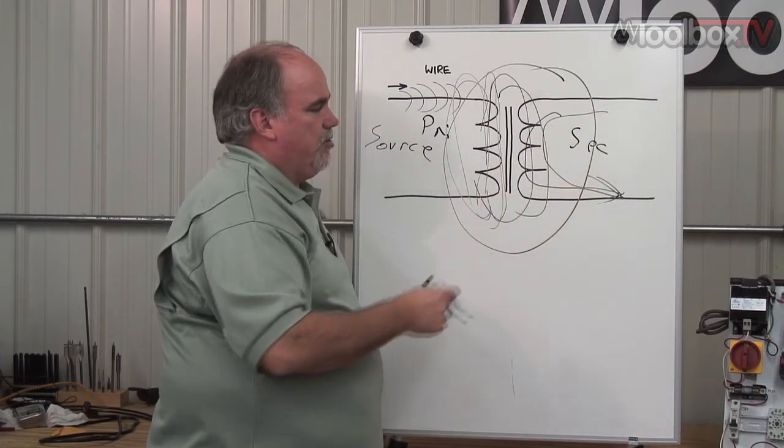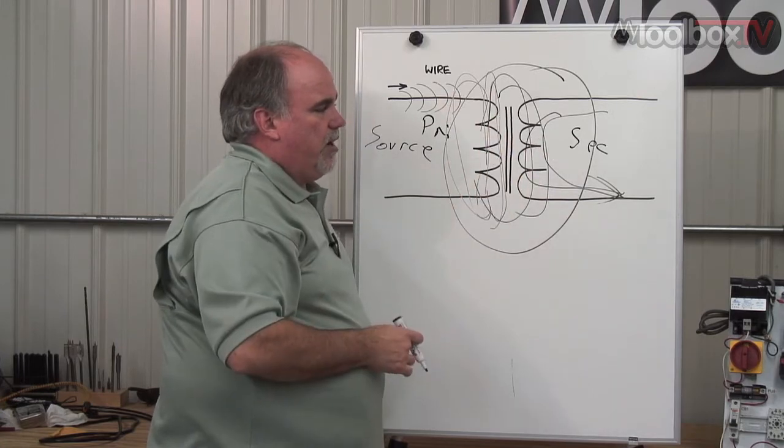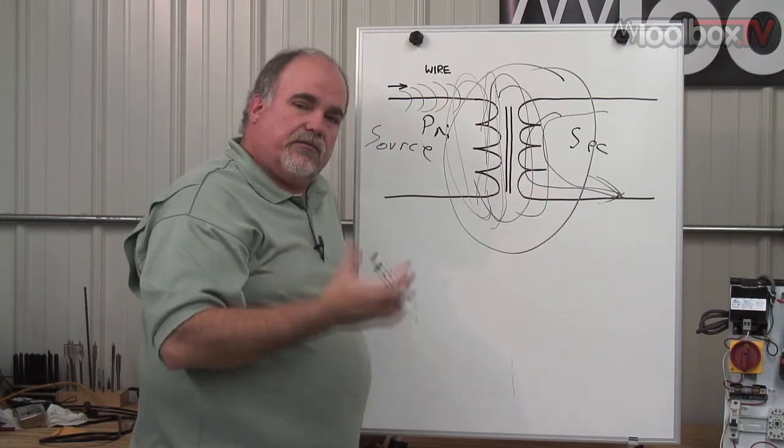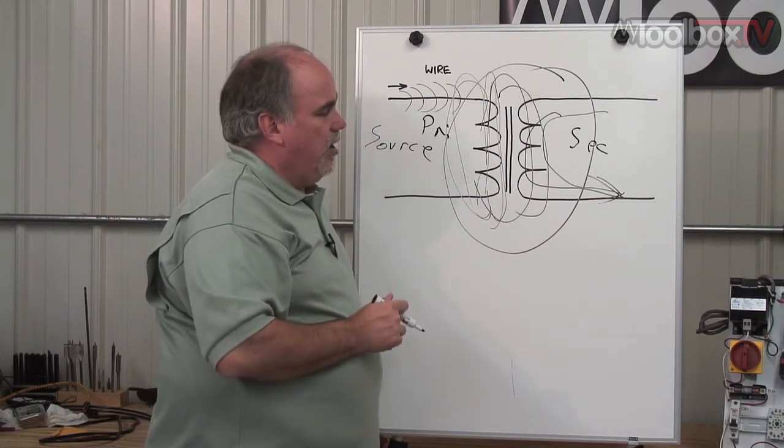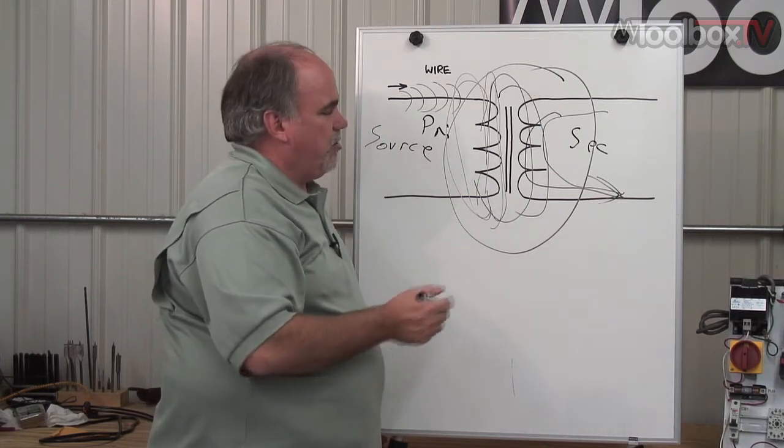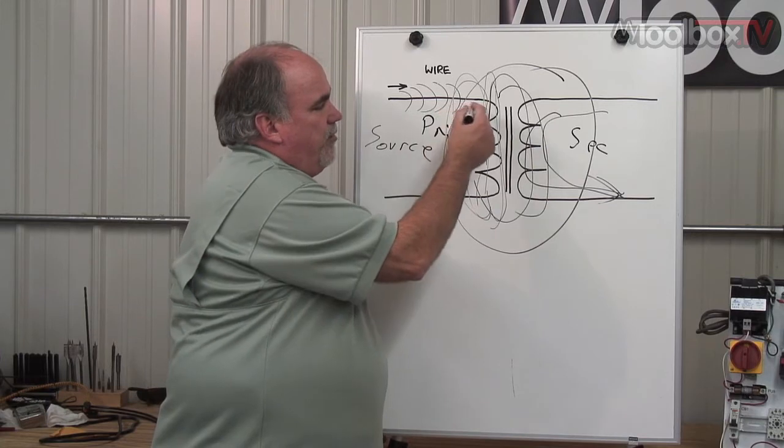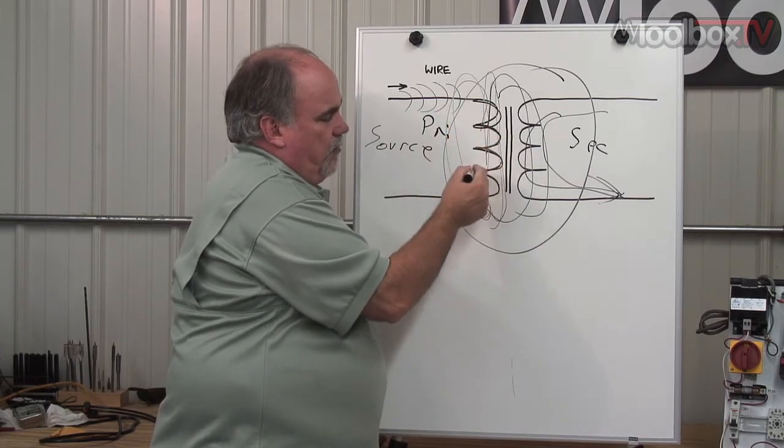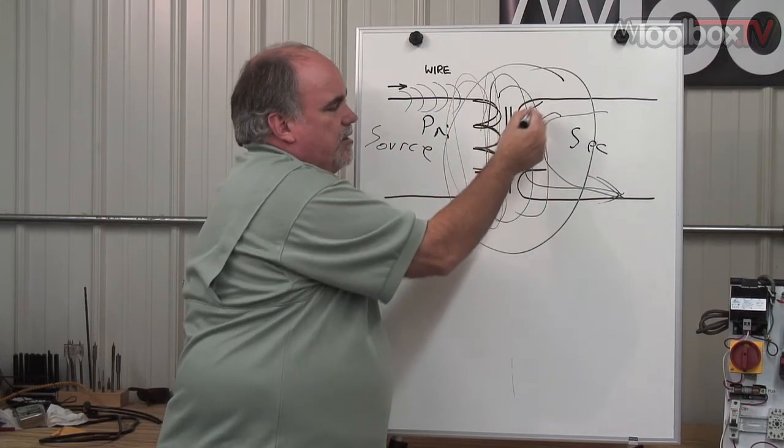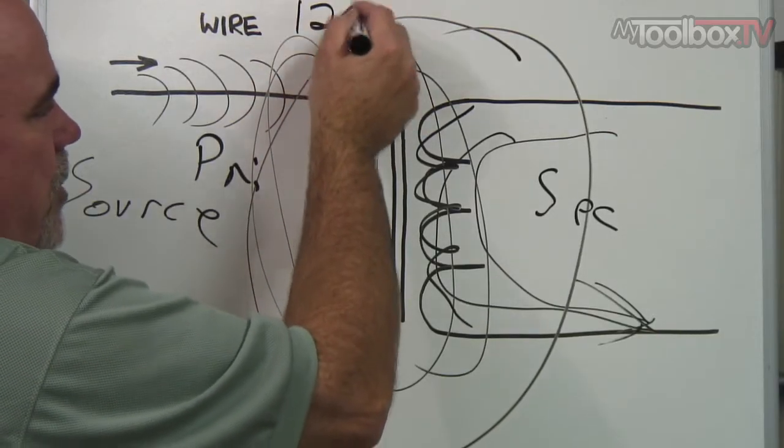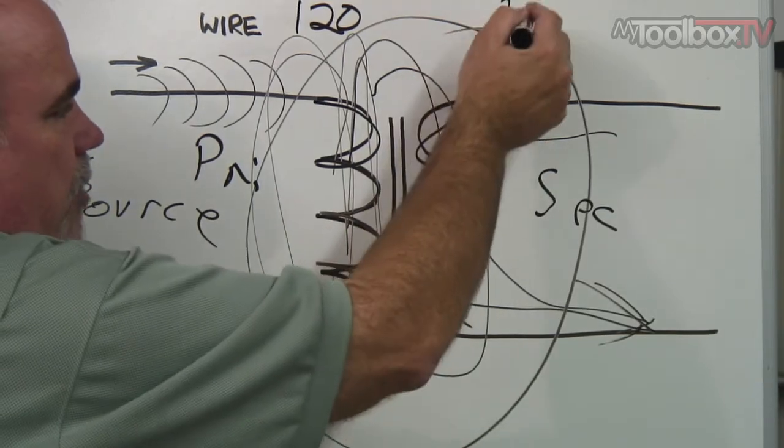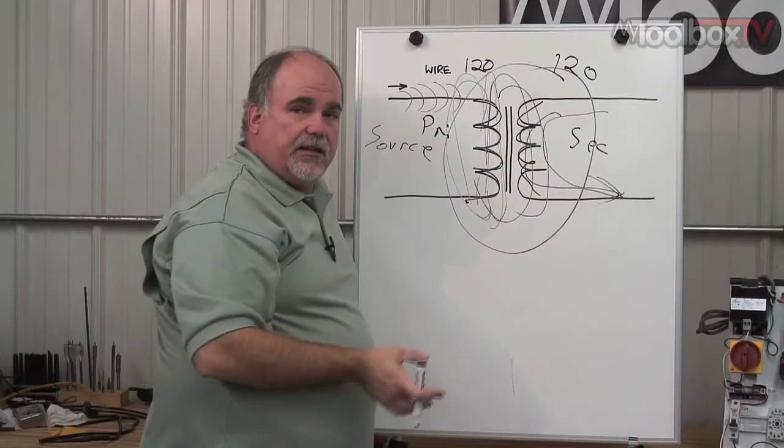That's the side that you can use a transformer to do things like change the voltage. If it's an isolation transformer, it means you're not changing the voltage. That would mean that the number of turns of wire on this side is the same on the secondary. So if you had 120 volts on the primary, you'd have 120 volts on the secondary.